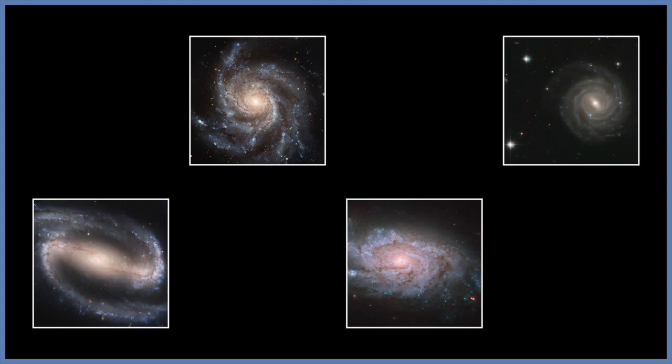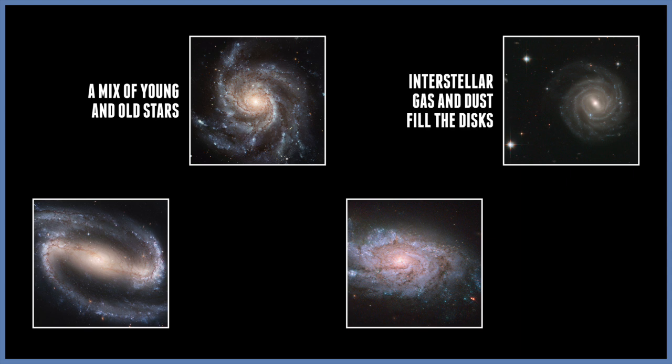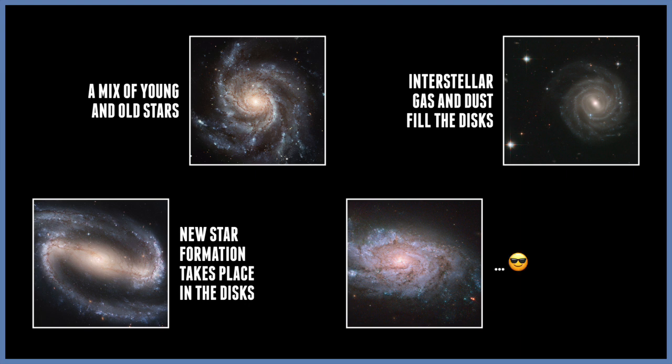Spiral galaxies, on the other hand, have a mix of young and old stars, because they have a lot of gas and dust that fills the disc of the spiral galaxy. The disc is the main source of new star formation. Spiral galaxies seem to have the rich ingredients for continuously creating new stars, so they can be known as the younger and fresher galaxies.